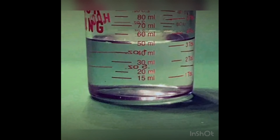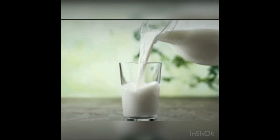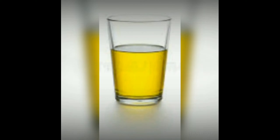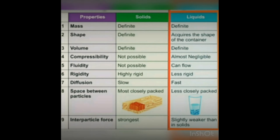Take 50 ml of water with a measuring jar, pour it in a tumbler, and mark the water level. Now measure 50 ml of milk and pour it in the same tumbler — the levels of water and milk are the same. Similarly, pour oil into the tumbler — its volume is also 50 ml. From this activity we observe that the shape of a liquid depends on the container, and volume is definite.